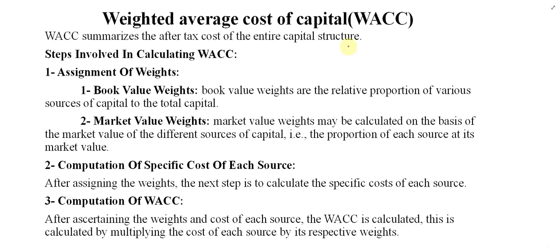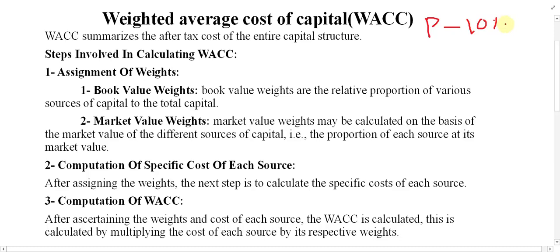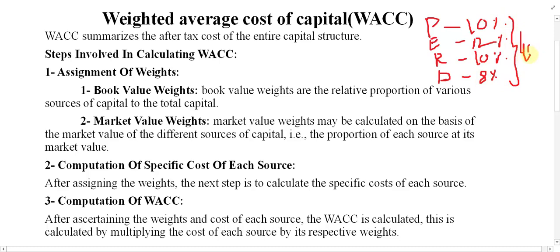The weighted average is basically the average cost of capital of the business. For example: cost of preference is 10%, cost of equity is 12%, cost of retained earnings is 10%, and cost of debt is 8%. To find the average, we add: 10 + 12 + 10 + 8 = 40.